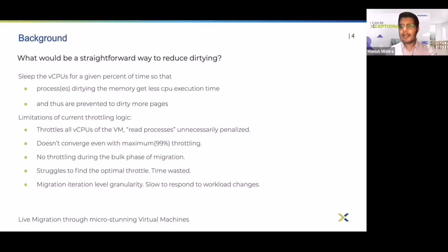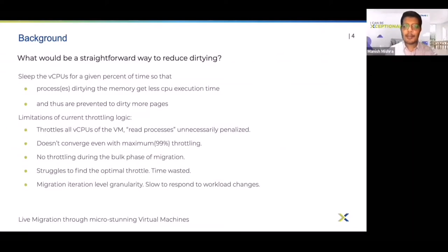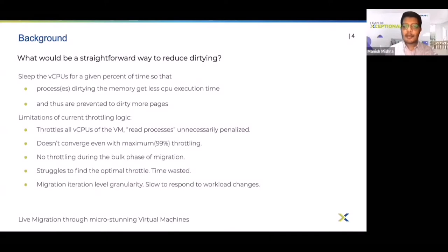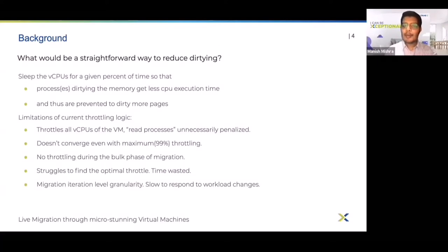The current throttling algorithm reduces the CPU runtime of the VM. For example, at 99% throttle, all vCPUs of the VM will be running only 1% of the time. As the runtime of the VM is reduced, it also reduces the total dirty rate, but this algorithm has limitations: it throttles all vCPUs irrespective of their contribution to overall memory dirtying, and it penalizes read-heavy vCPUs even though reads do not count toward memory dirtying.